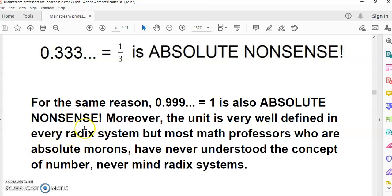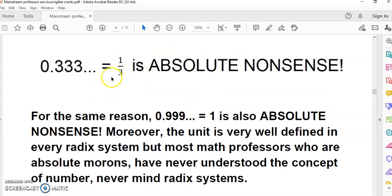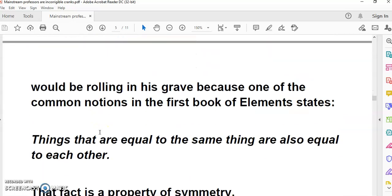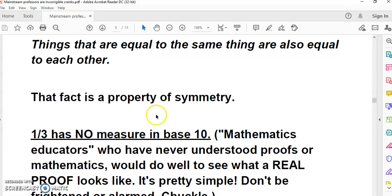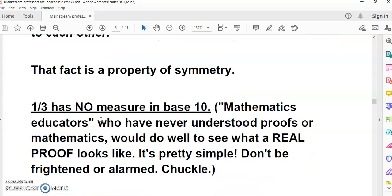Another very important reason is that this number 1/3 - because the vinculum doesn't mean divided, it's just part of the name of the number. One over three is a name. For the same reason, 0.999... = 1 is also absolute nonsense. Moreover, the unit is very well defined in every radix system, but most math professors who are absolute morons have never understood the concept of number, never mind radix systems. What we really need to know about this number 1/3 is that it has no measuring base 10.